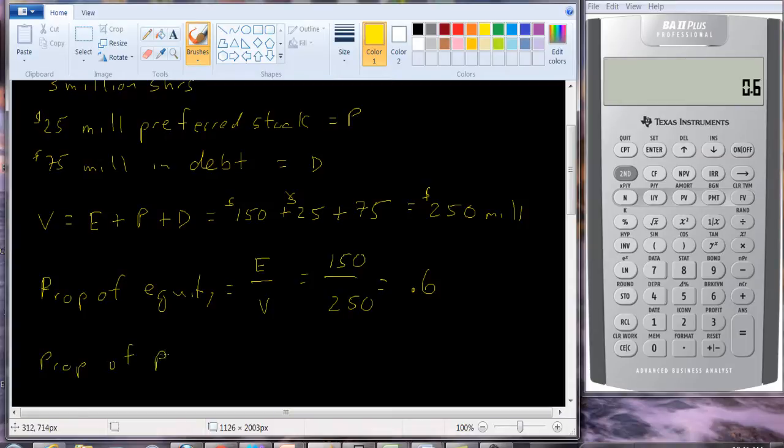The proportion of preferred stock is going to be P over V. So it's going to be 25 over 250. And that's easy to calculate, that's going to be 10%.